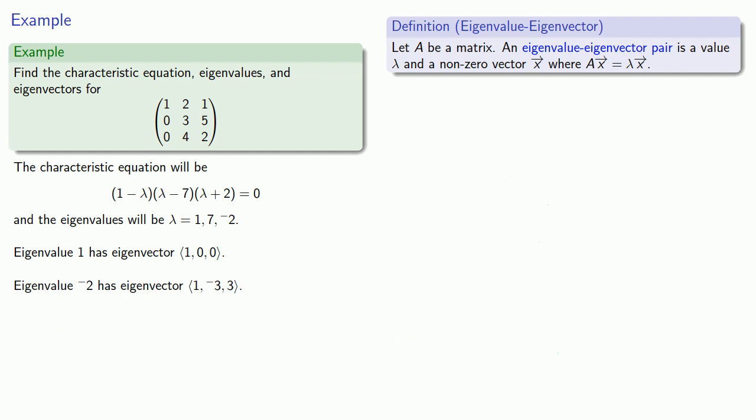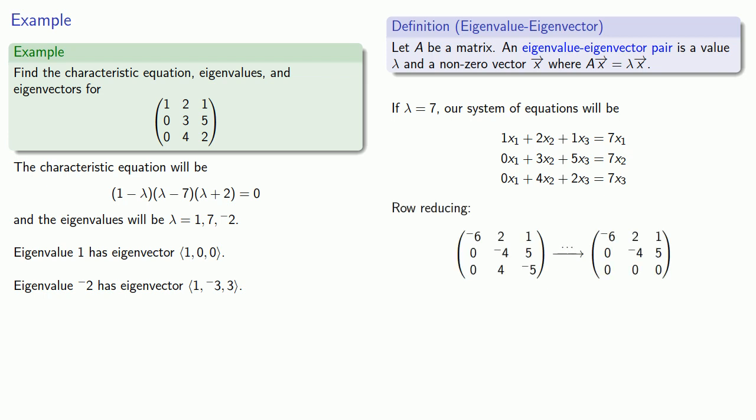Finally, for our eigenvalue 7, our system of equations will be matrix equals 7 times vector. Row reducing that system of equations gives us our parametrized solutions.